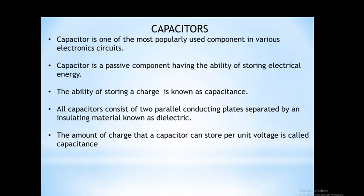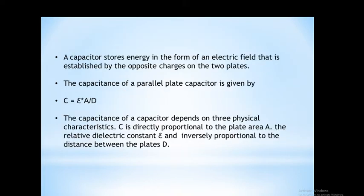Capacitor has capacitance, and capacitance is the ability to store electrical energy in the component. This capacitor consists of two parallel conducting plates separated by an insulating material known as dielectric. The amount of charge that a capacitor can store per unit voltage is called capacitance. Capacitor stores energy in the form of electric field established by opposite charges on the two plates.